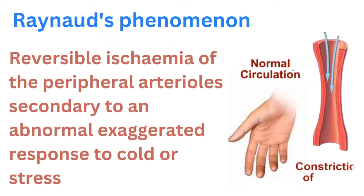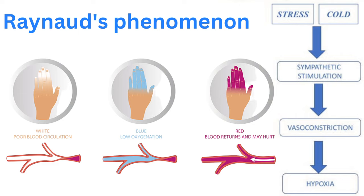Raynaud's phenomenon is characterized by reversible ischemia of peripheral arterioles. This phenomenon arises as a result of an abnormal response to cold or stress, leading to a distinctive triphasic reaction. In Raynaud's phenomenon, there is excessive sympathetic nervous system response, involving the mediation of vasoconstriction in arteries and arterioles through alpha-2-adrenergic noradrenaline. This heightened reaction is central to the development of the characteristic symptoms observed in Raynaud's.